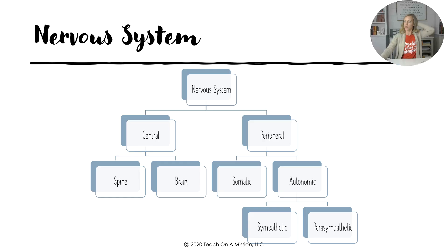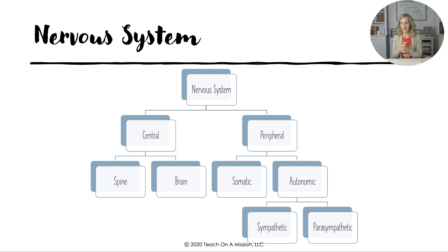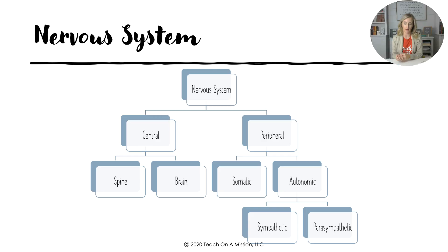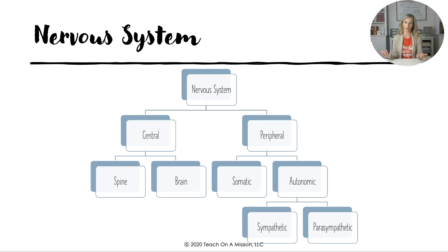For the nervous system, understand its overall organization. Under the nervous system you have two parts: central and peripheral. The central nervous system — brain and spine — is where our interneurons are. The peripheral nervous system — somatic and autonomic (sympathetic and parasympathetic) — is where our motor and sensory neurons, called afferent and efferent, are. The autonomic nervous system controls all involuntary movement, like heartbeat, digestion, and sweating — things you can't consciously start or stop.